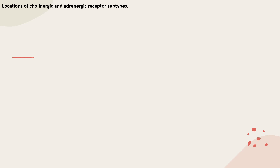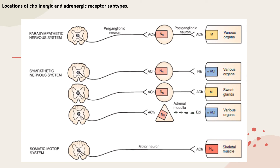Regarding the locations of cholinergic and adrenergic receptor subtypes: nicotinic N receptors are located on the cell bodies of all postganglionic neurons of the parasympathetic and sympathetic nervous systems, and also on cells of the adrenal medulla. Nicotinic M receptors are located on skeletal muscle. Muscarinic receptors are located on all organs regulated by the parasympathetic nervous system and on the sweat glands. Adrenergic receptors — alpha, beta, or both — are located on all organs regulated by the sympathetic nervous system and on organs responding to epinephrine released from the adrenal medulla.